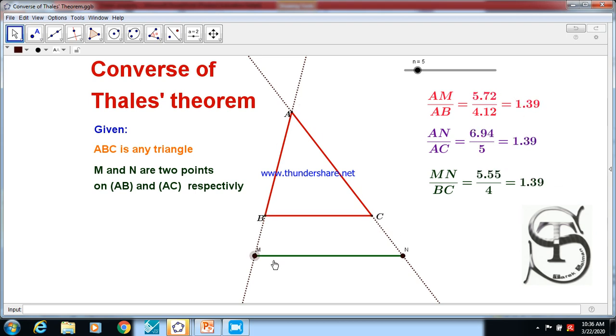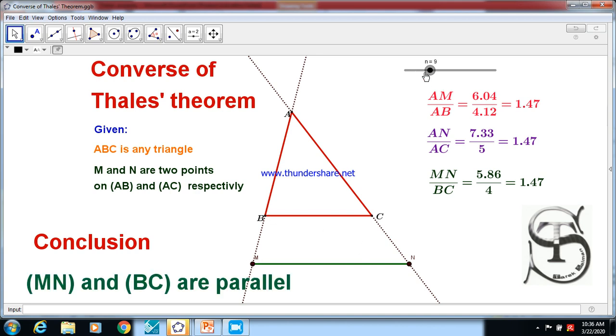So in all these cases, the sides are proportional. So in conclusion, what can you conclude? We can conclude that the line MN and BC are parallel.